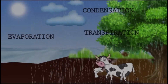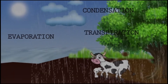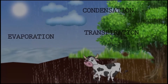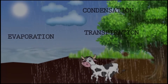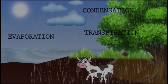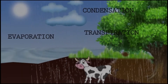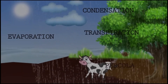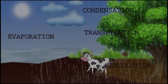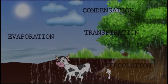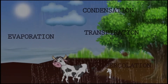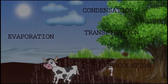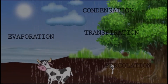Transpiration: plants, like animals, exhale, but they bring out water from their body through stomata and it goes back into the atmosphere. Percolation: the water which falls to the ground as rain passes through the tiny spaces between soil and rocks, is filtered, and goes back to the water body.